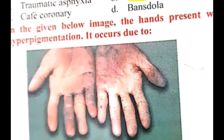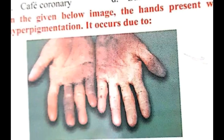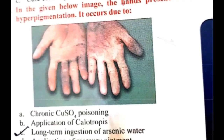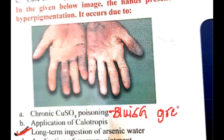The next question shows hands with hyperpigmentation and asks for the cause. The hyperpigmentation of the hands is due to long-term administration of arsenic-containing water. Long-term arsenic exposure causes hyperpigmentation of the skin. If it were copper sulfate, you would see bluish-green discoloration, not black or brownish discoloration. So it is not copper sulfate — the discoloration here is due to arsenic poisoning.